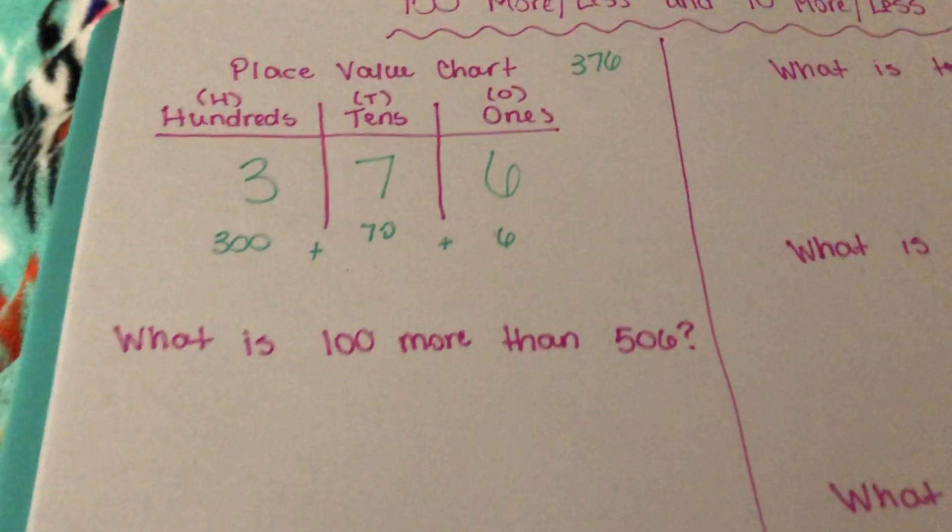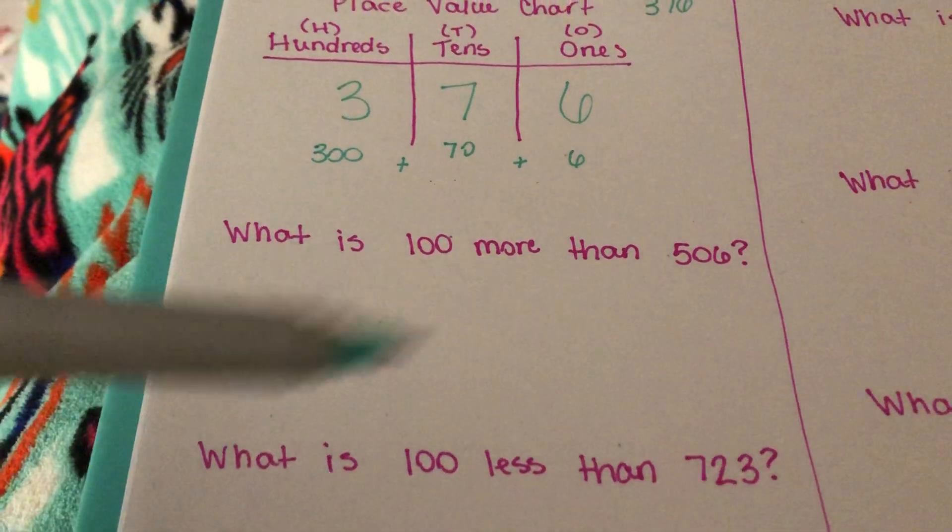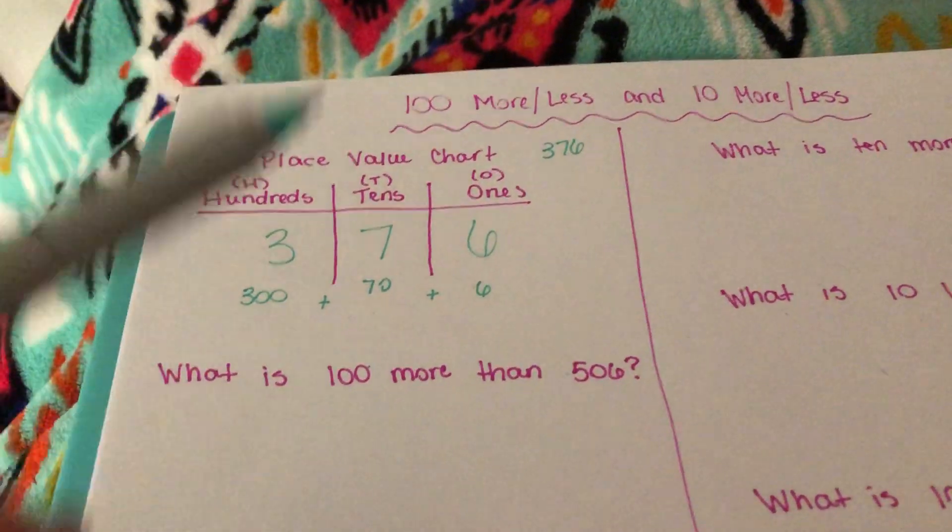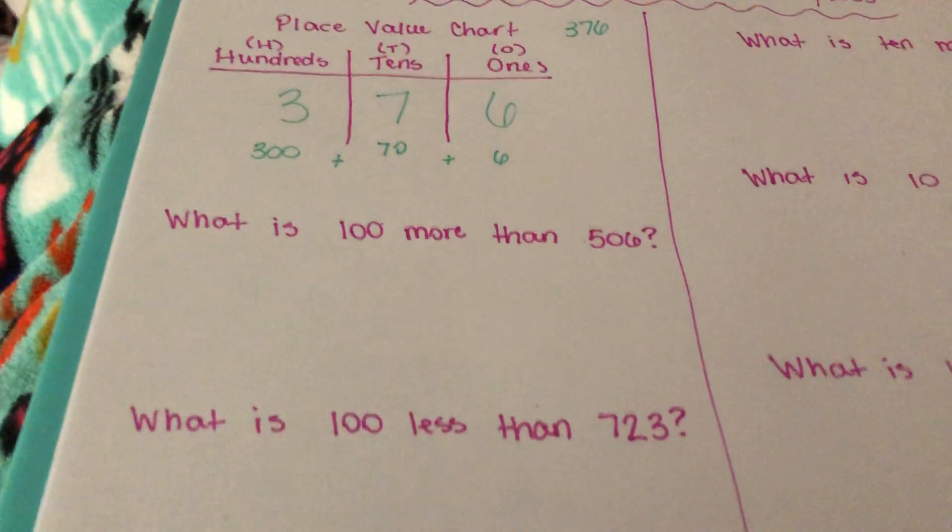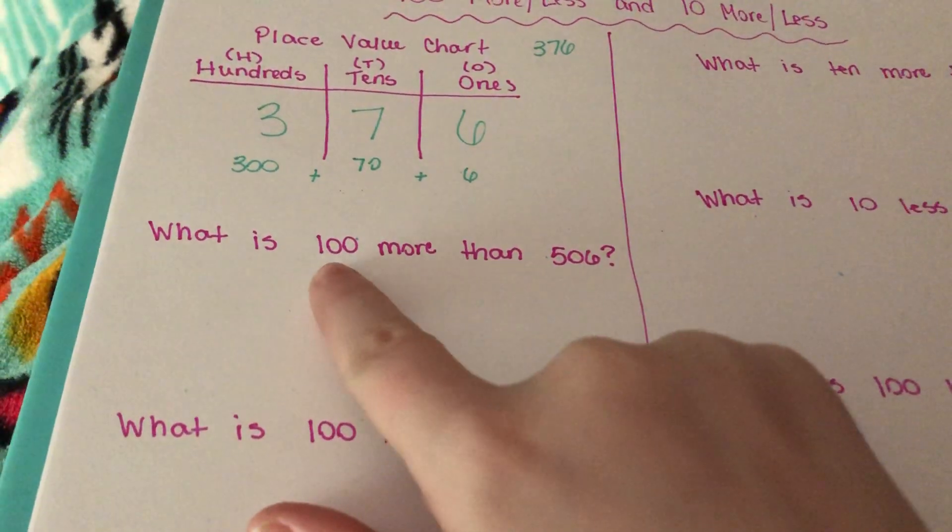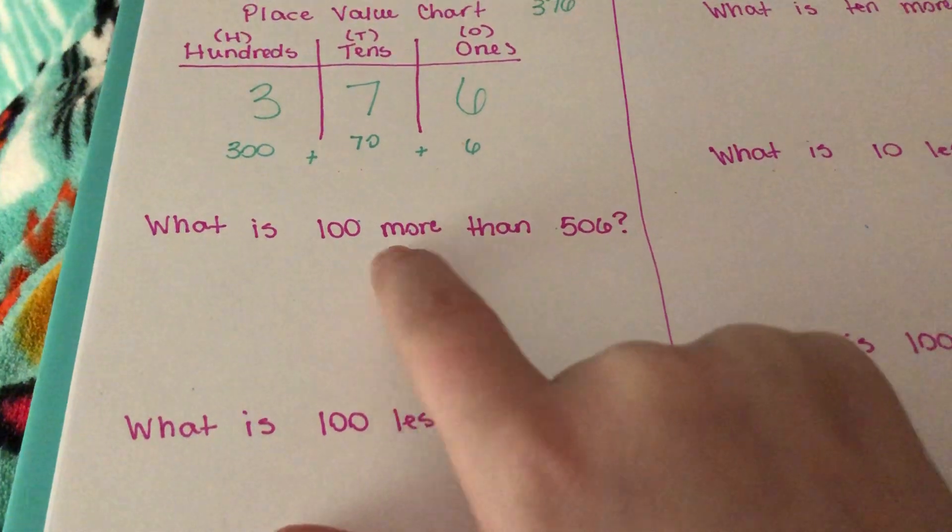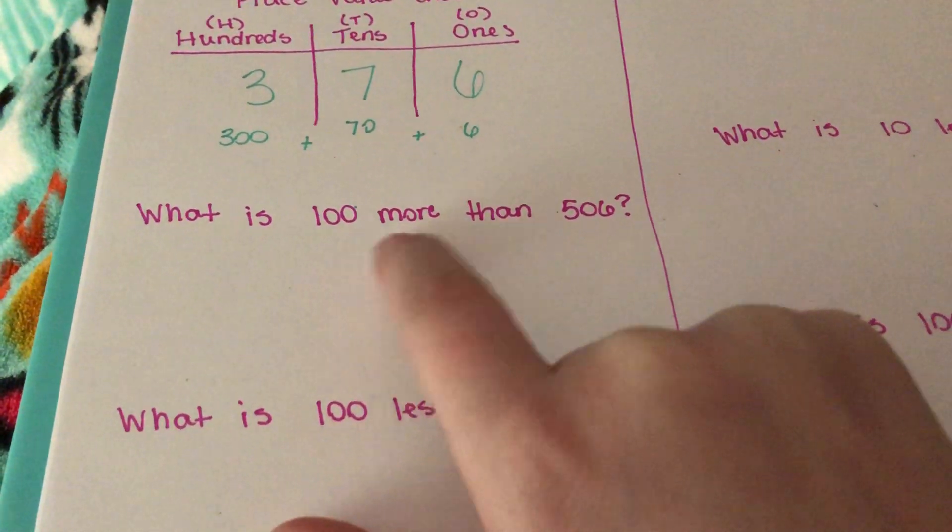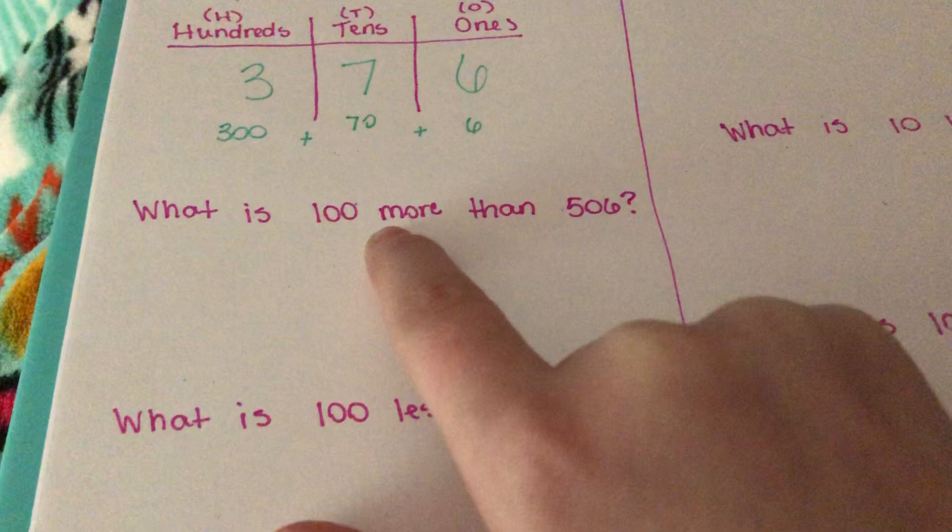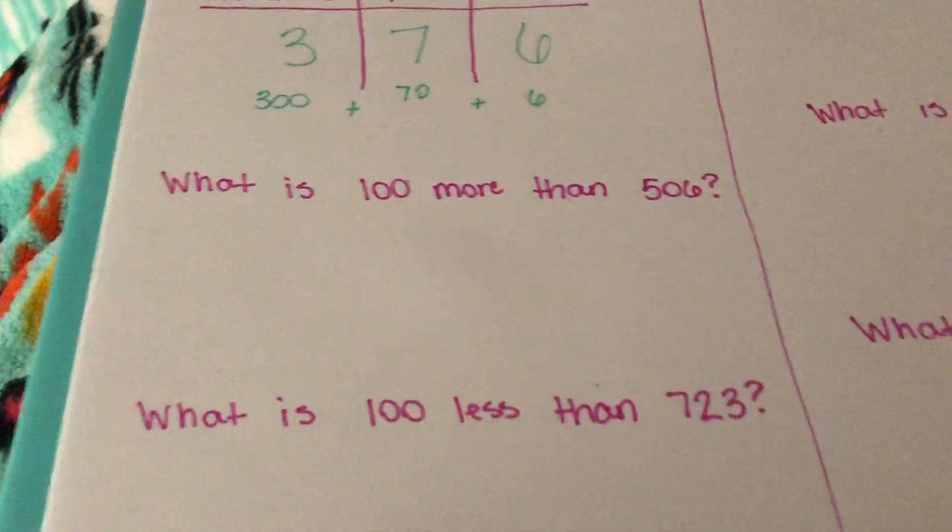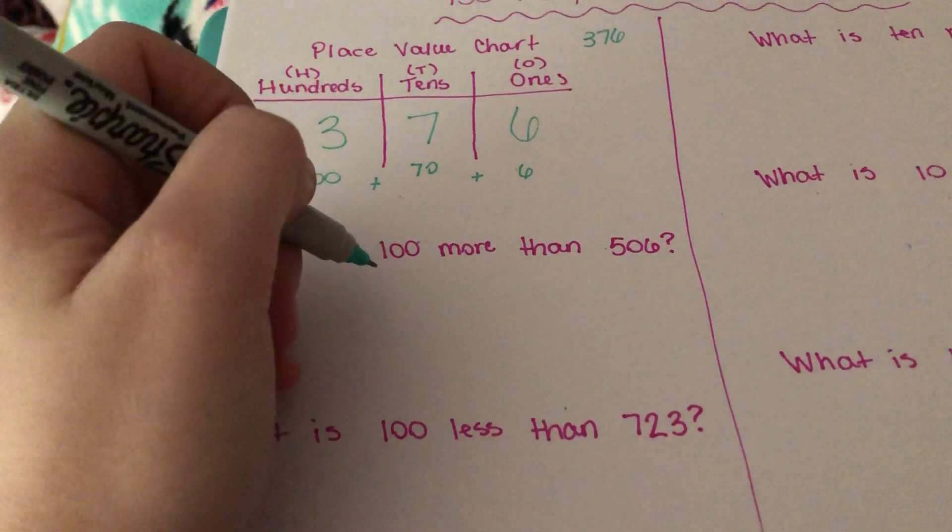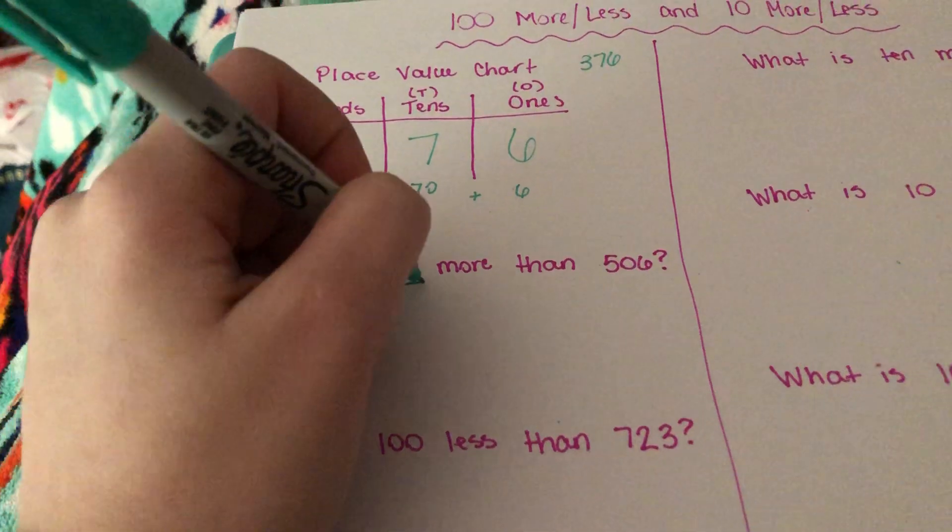So on their test, students are going to be asked, what is 100 or 10 more or less than a certain number? The one big thing that we want to make sure is that students have their highlighter out and they are highlighting what they're asking. So often they'll be asking for 10 more and the students will do 100 more. They will be asking for 10 less and kids will do 10 more.